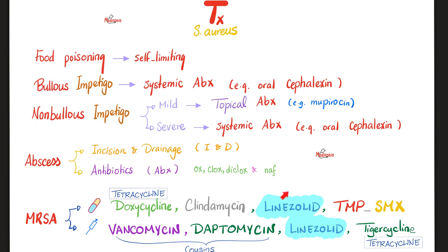We start top left with a tetracycline — doxycycline. We end down and to the right with another tetracycline — tigecycline. Then let's memorize one and two, because they rhyme together: doxycycline, clindamycin. For intravenous: vancomycin, daptomycin — these two are cousins. So now I've memorized one, two, and three. Four is different: if it's oral, add TMP-SMX; if it is intravenous, that's tigecycline.